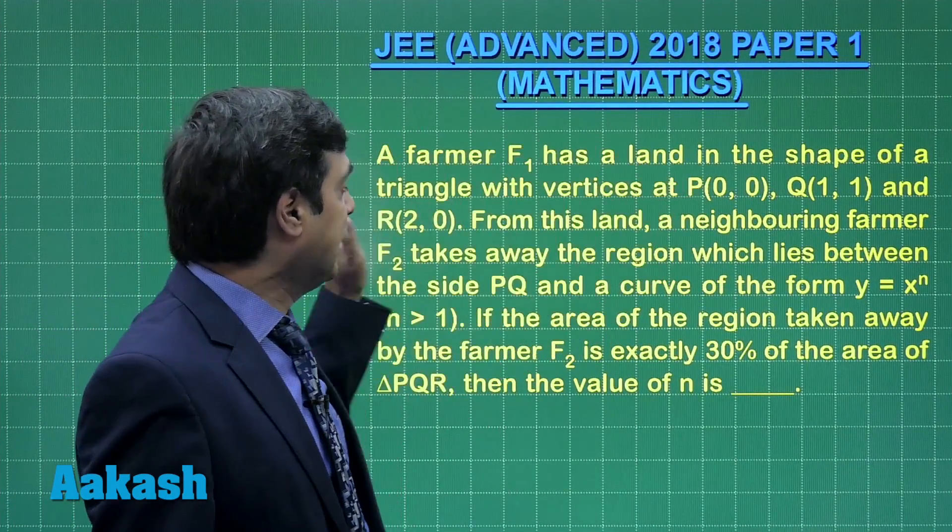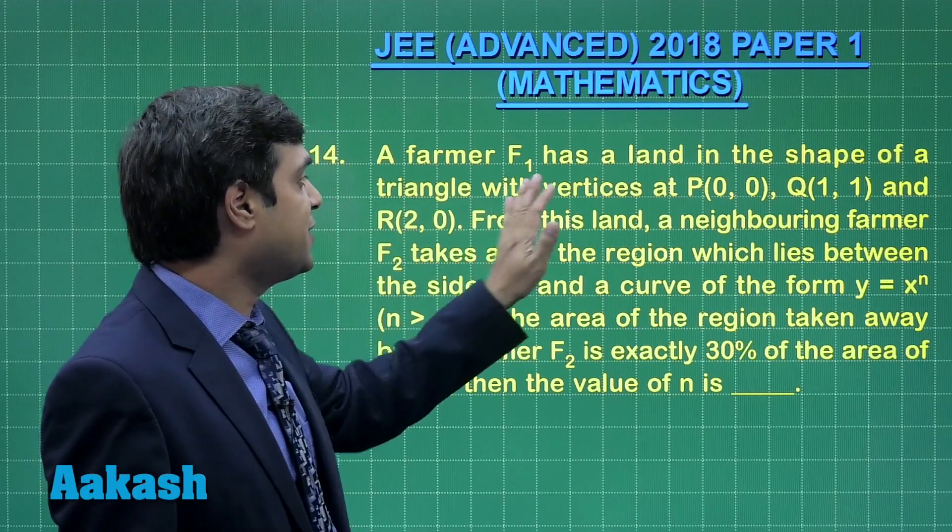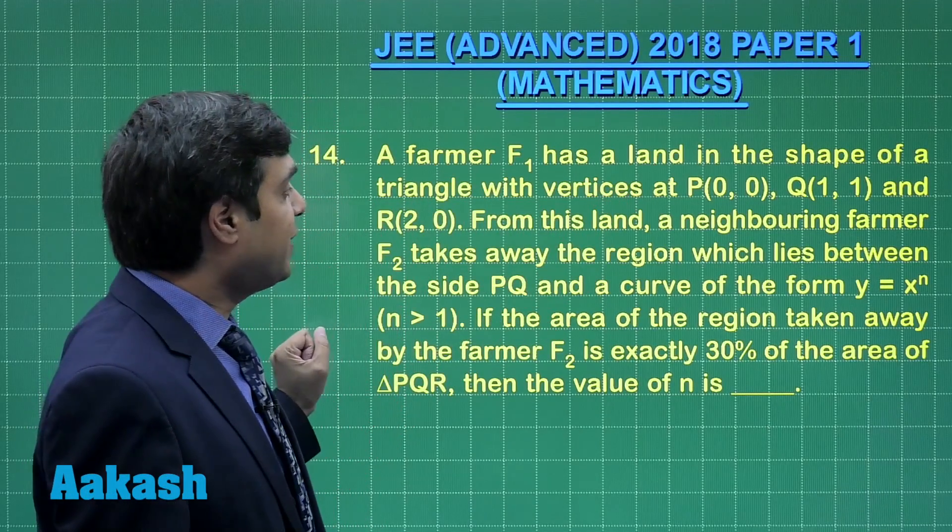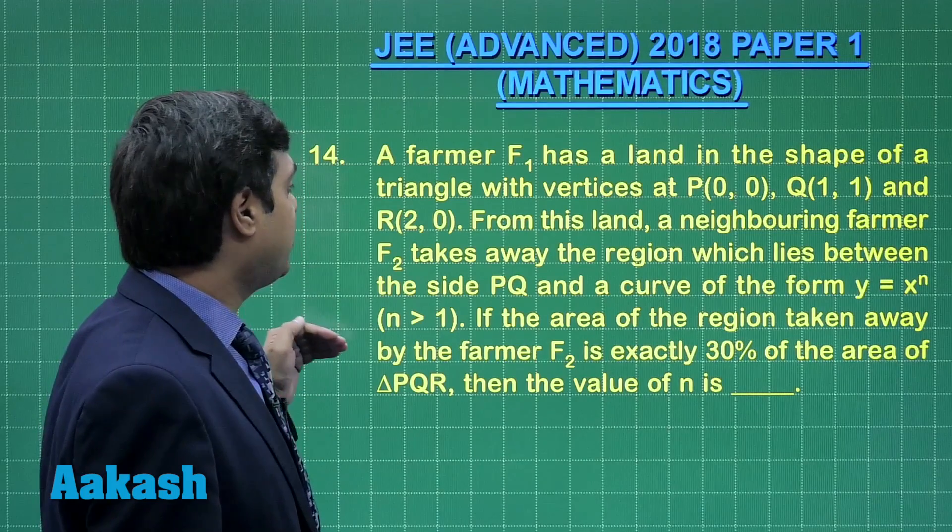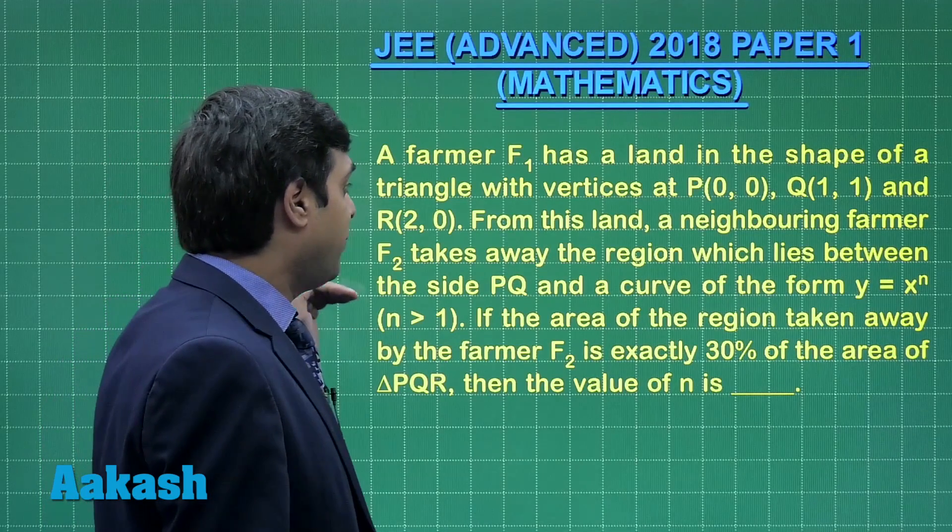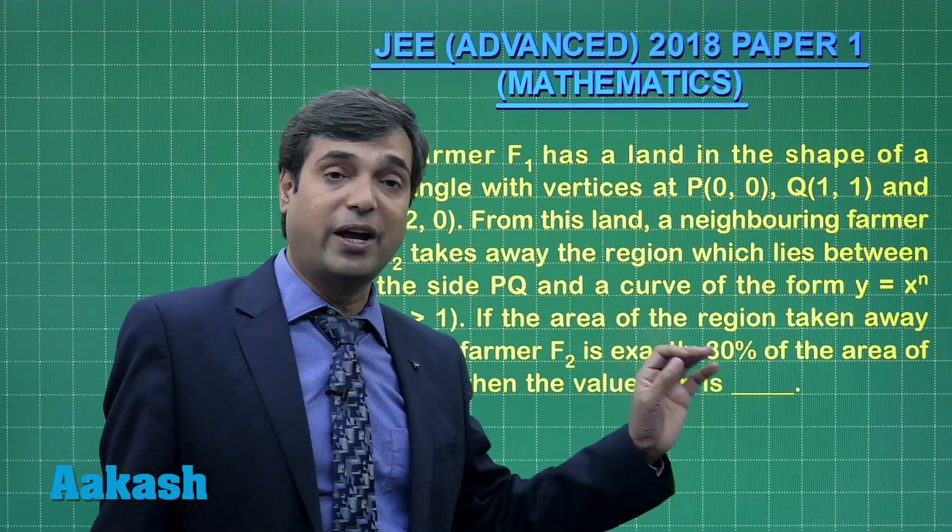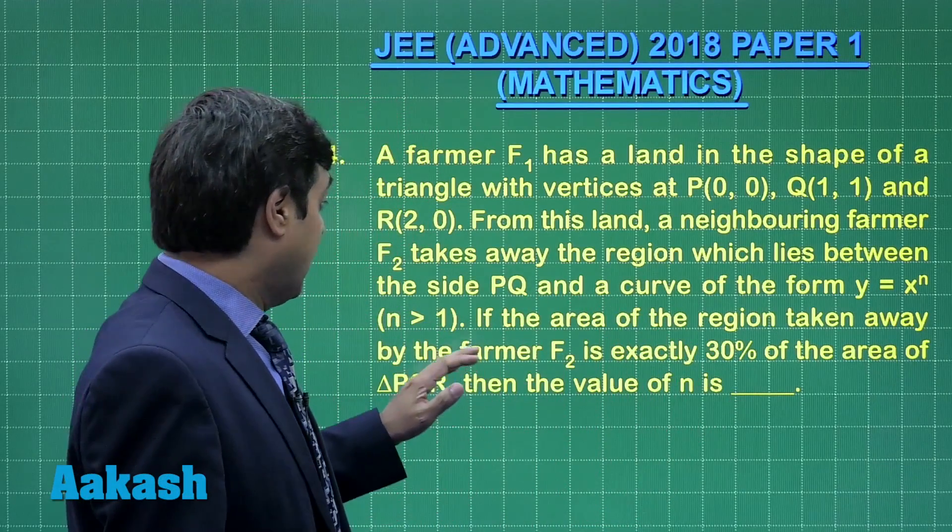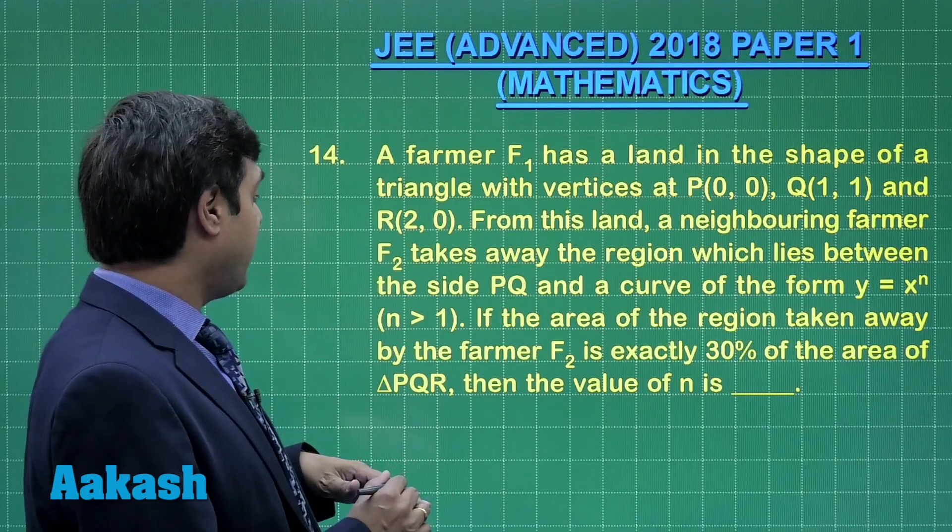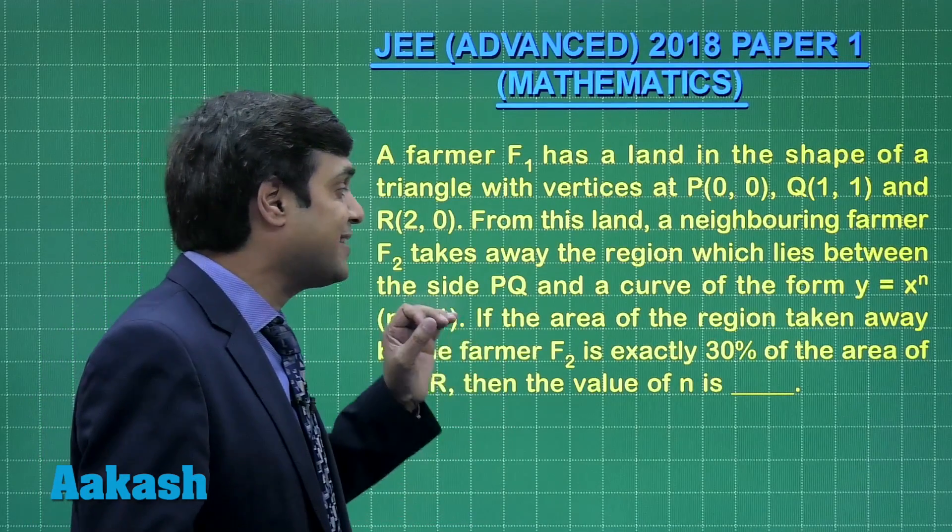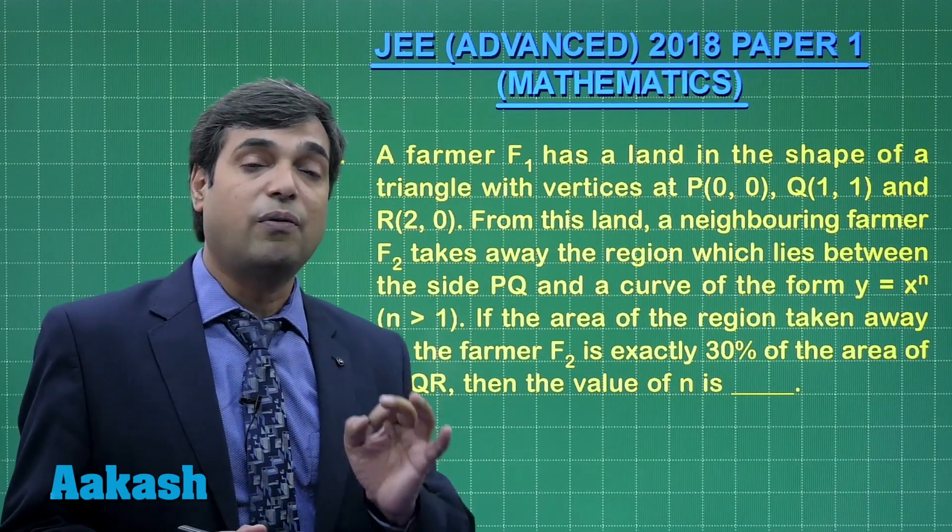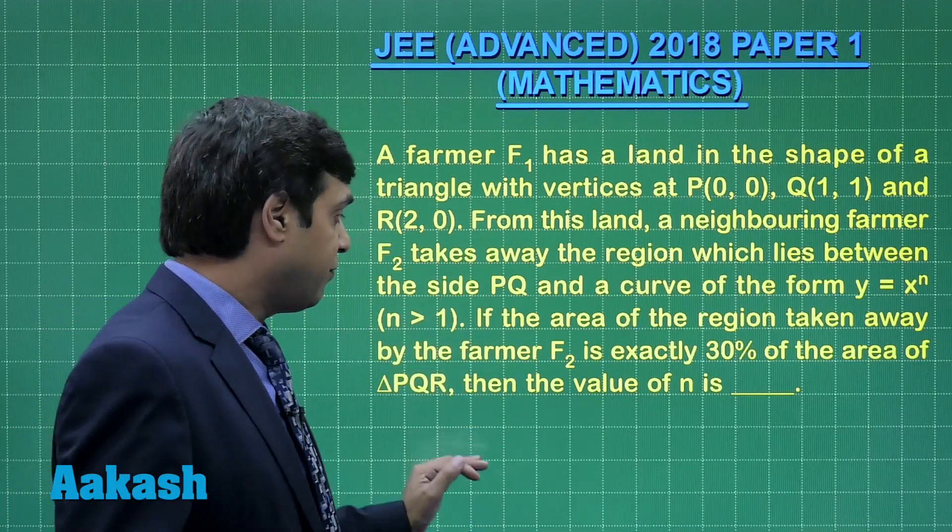Taking question number 14. A farmer F₁ has a land in the shape of a triangle with vertices P(0,0), Q(1,1), and R(2,0). From this land, a neighboring farmer F₂ takes away the region which lies between the side PQ and a curve of the form y = xⁿ. If the area of the region taken away by farmer F₂ is exactly 30% of the area of the triangle, then find n.